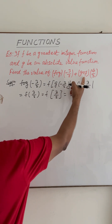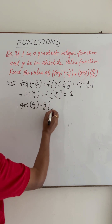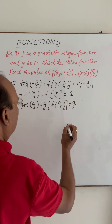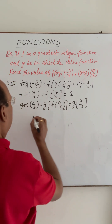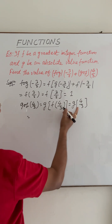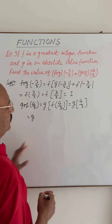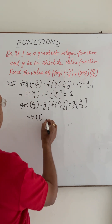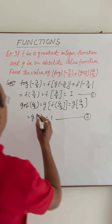Next, for g∘f(4/3), this equals g of f(4/3). Since f is the greatest integer function, the greatest integer value of 4/3 (which is 1.3) is 1. Then g of 1, since g is the absolute value function, equals 1.